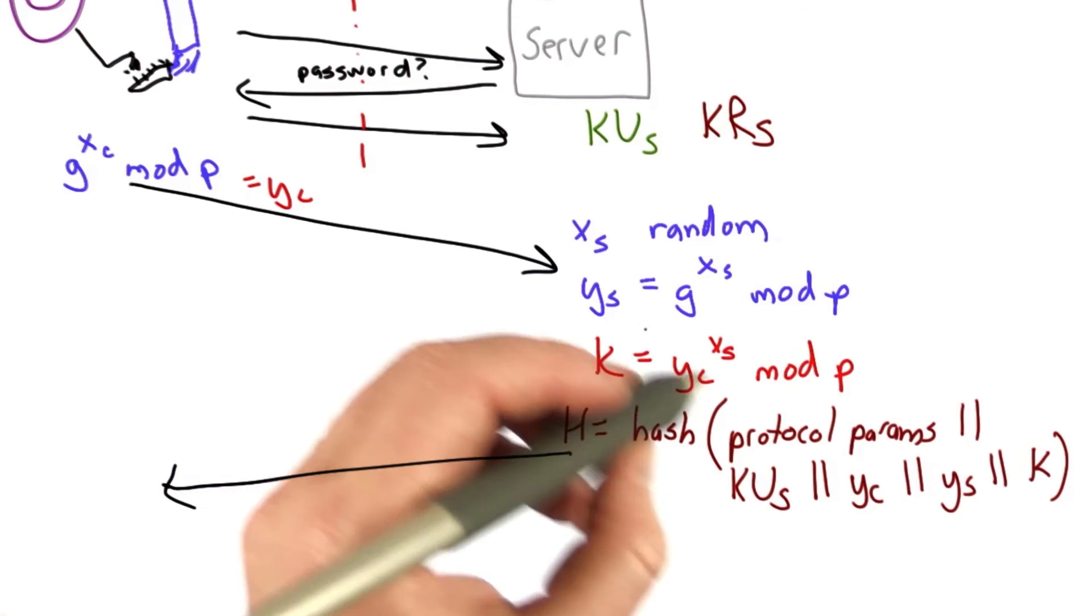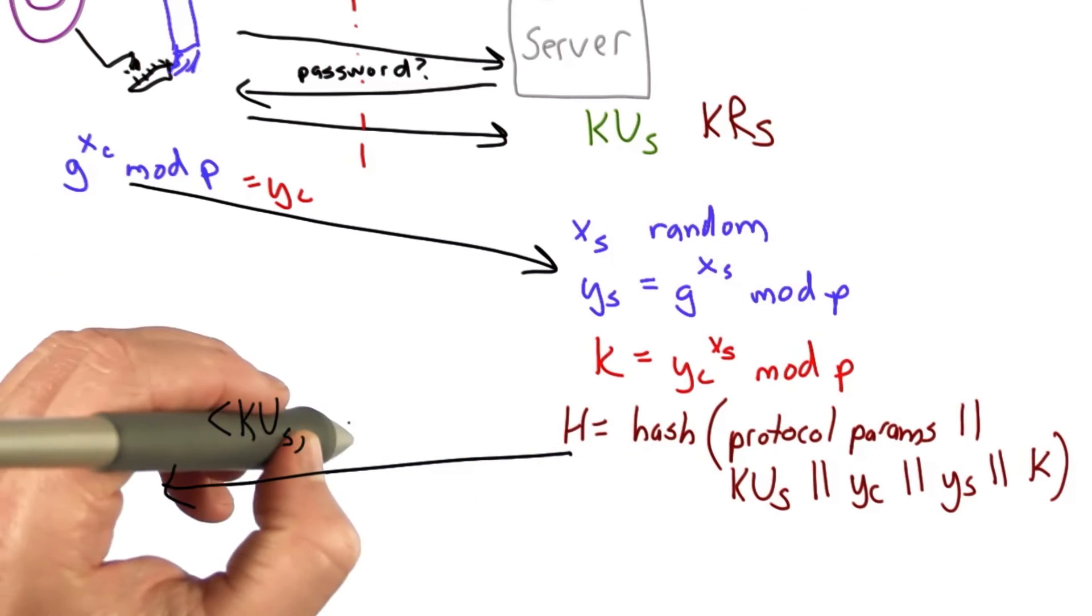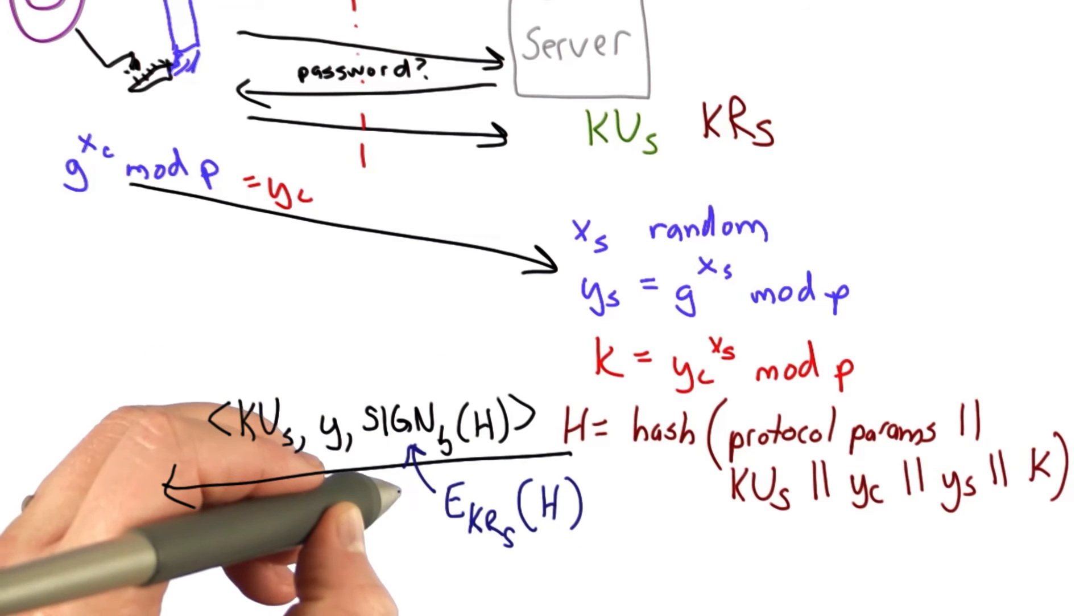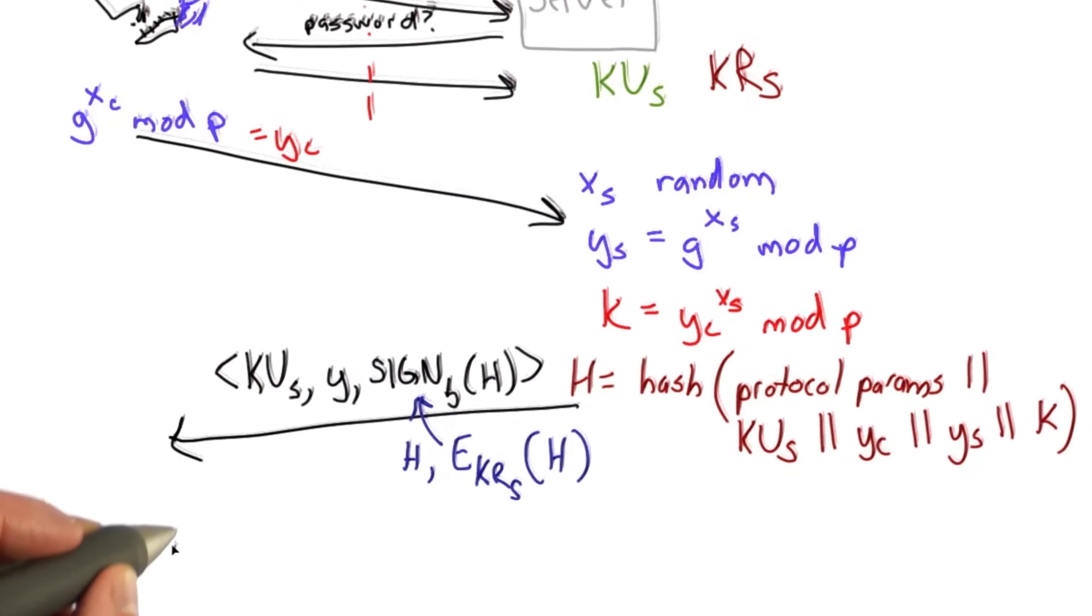And so what the server sends is the value of its public key, the value of ys, and the hash signed with the server's private key. So we think of that as sending the hash along with the hash encrypted with a private key. That's what it means to do a signature in a symmetric cryptosystem.